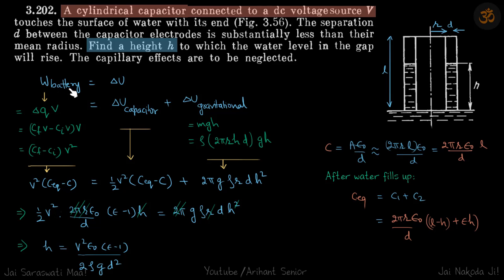Work done by battery is the charge passing through it times V. Delta Q is final CV minus initial CV, which if you put the values from here - okay, we will put the values later. Let's first just write it in the form of V square into (C equivalent minus C).